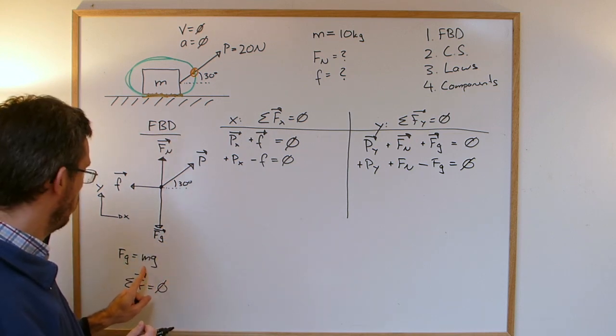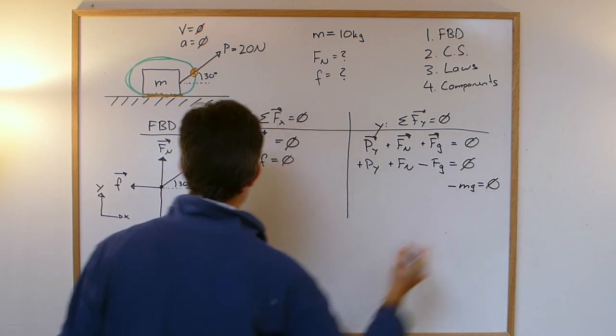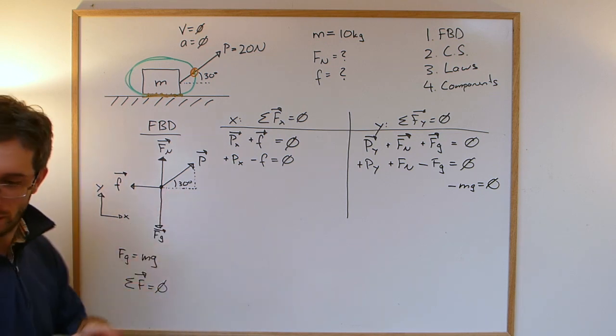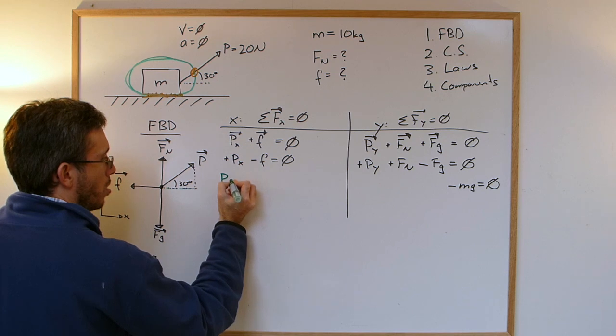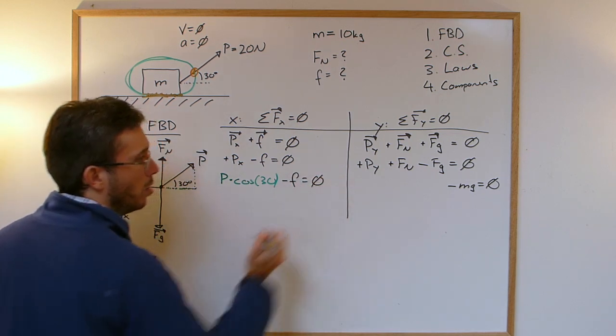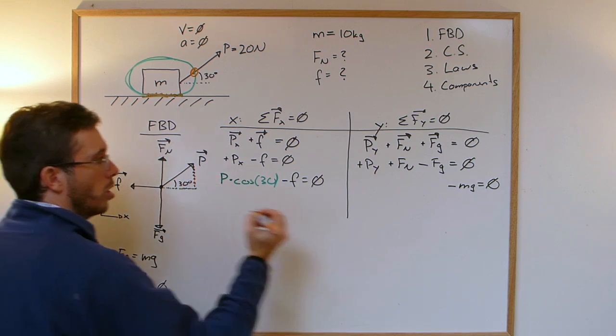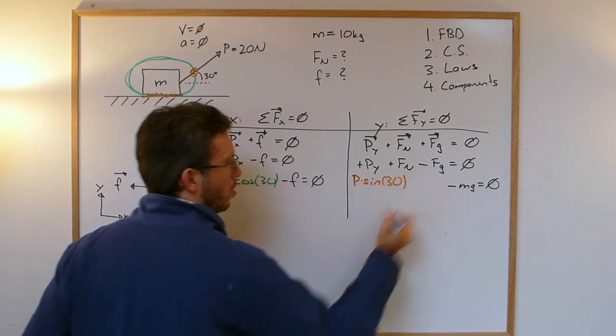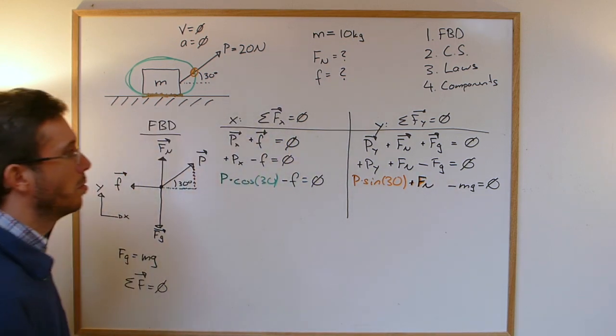Next step, I'm going to plug in what I know. I know that my Fg is mg, so I can put that one in. So minus mg is zero. I also can do some trigonometry here. So I know my x component will be my push times cosine of 30 minus friction is zero. And on the other side, for my y component of the push, I'll use sin. So P sin 30 plus Fn minus mg is zero.